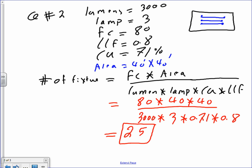Lumens are 3,000. Lamps are 3, 3 lamper. Foot candle 80. Light loss factor is 0.8. Coefficient of utilization 71. Area is 40 by 40. My question for you would be, find how many fixtures you need using this type of fixture. The formula is very easy. Take the foot candle, multiply by the area, divide it by lumens, lamps, coefficient of utilization, LLF.